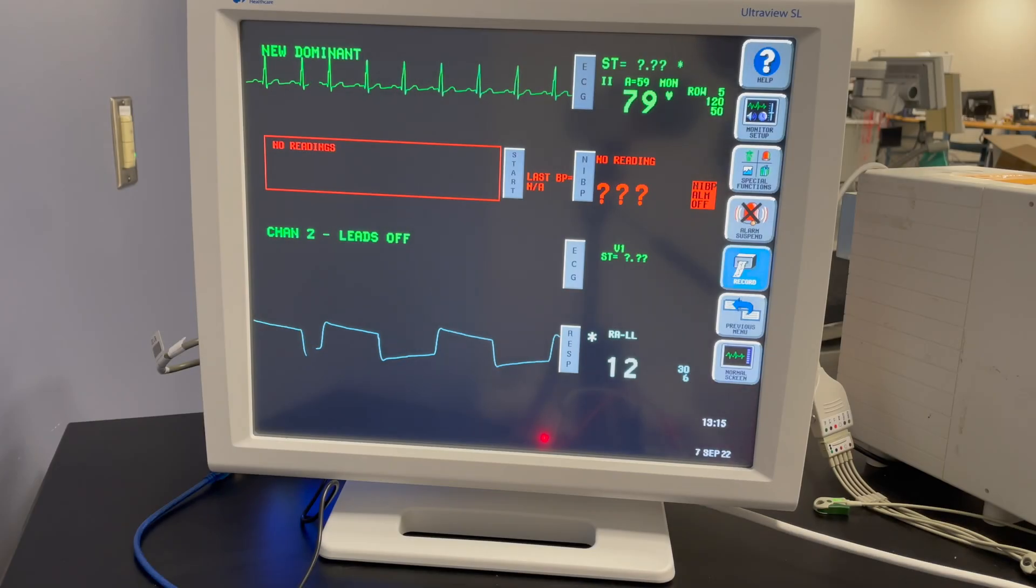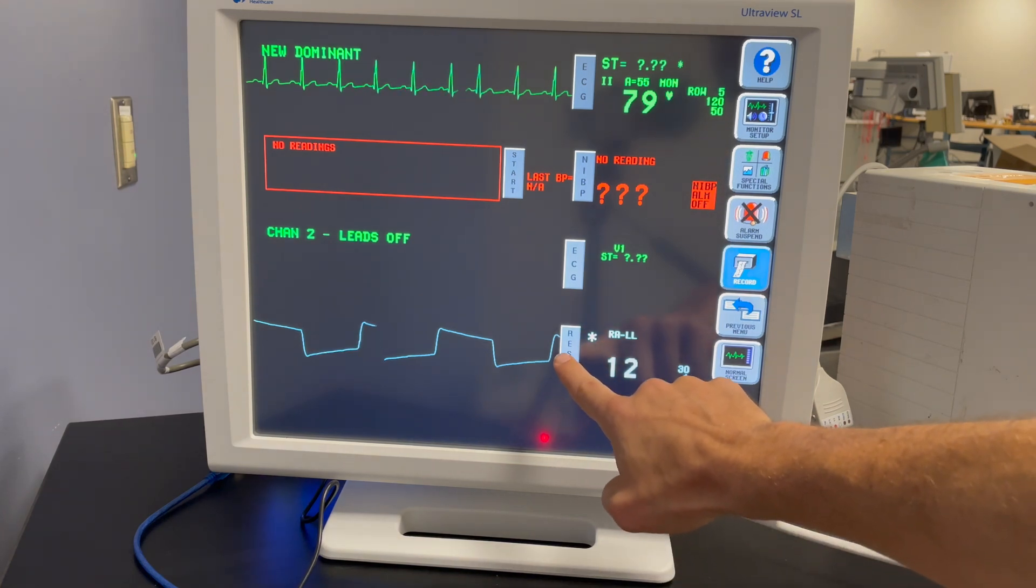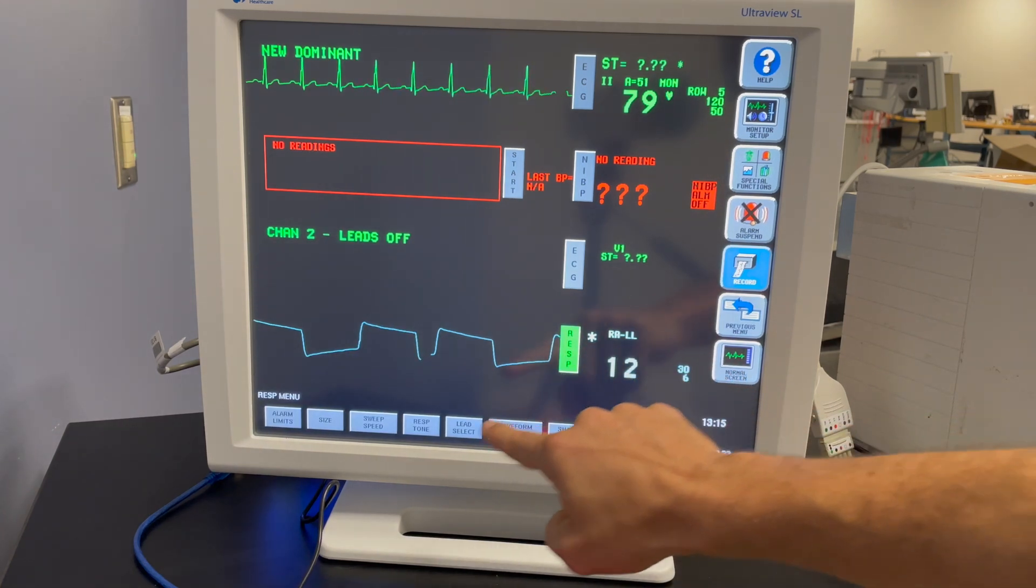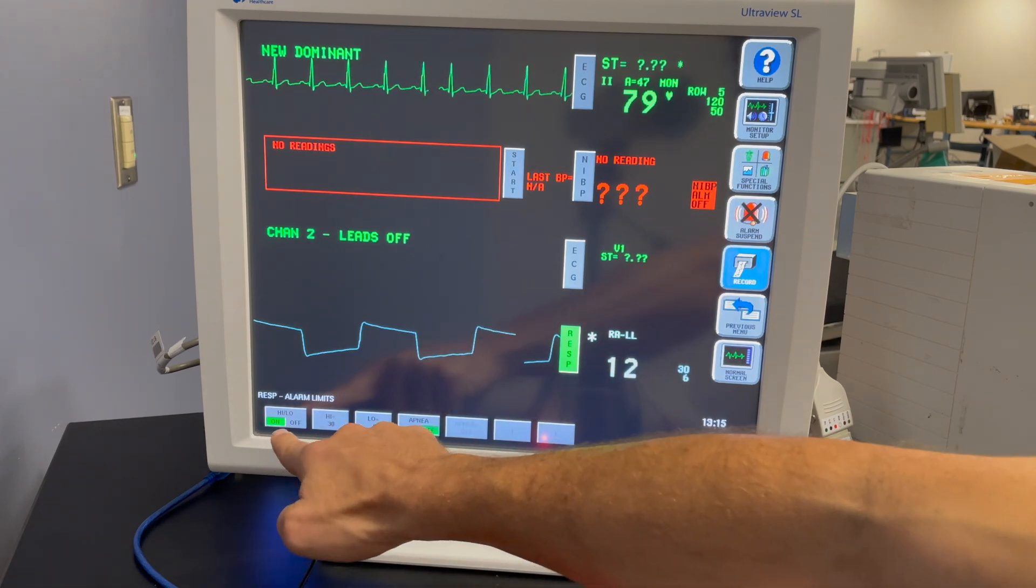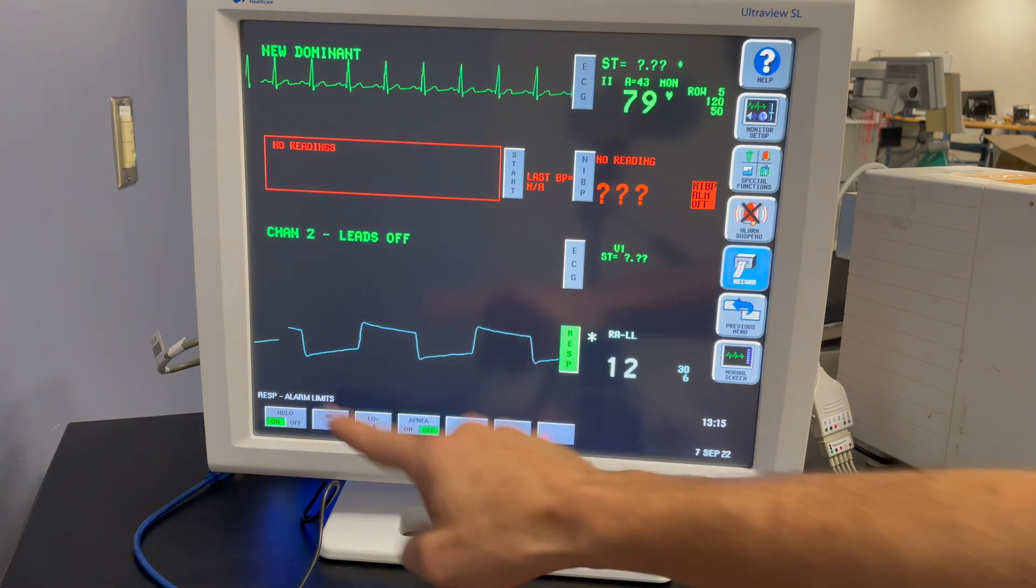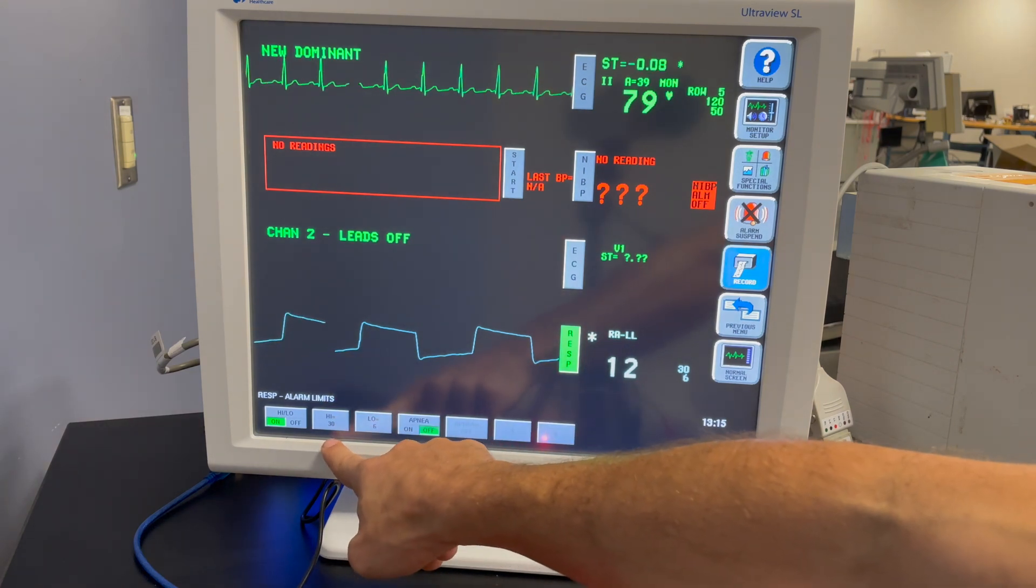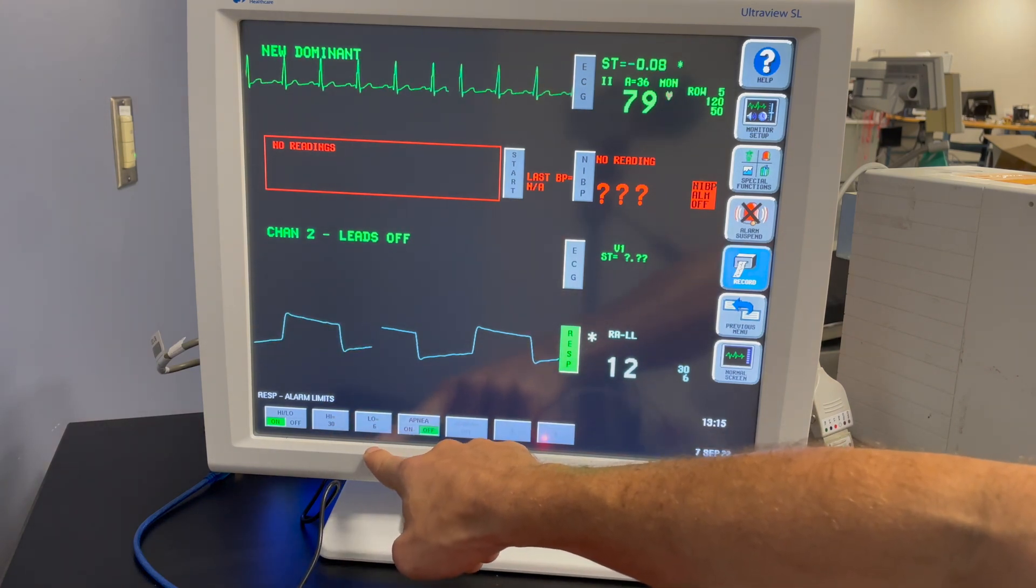Another thing you can do with your patient simulator is test the respiratory rate alarms. For the last couple tests I've actually had the alarms off. I just went ahead and turned them on. They're on right now. Now the high alarm is set to 30 and the low alarm is set to 6.